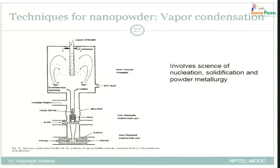Liquid nitrogen is used to create a very supercooled condition to achieve very homogeneous nucleation. There is a liquid nitrogen column and an evaporation source where the material to be powdered is heated. The material is brought to nearly a molecular state, and when these molecules reach the liquid nitrogen at very low temperature, the very large undercooling causes homogeneous nucleation. The vapors solidify quickly under homogeneous nucleation conditions, producing very fine powders that are collected by a scraper.